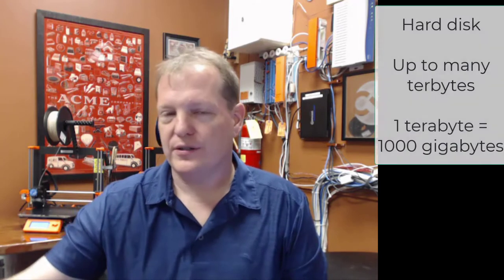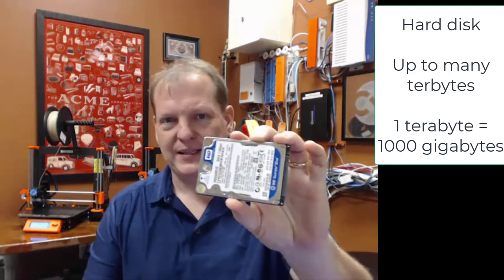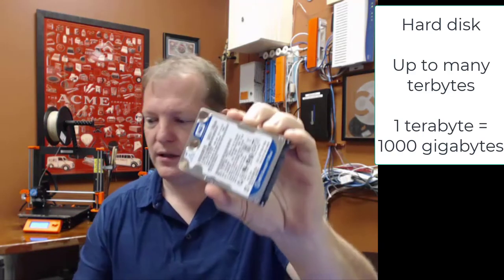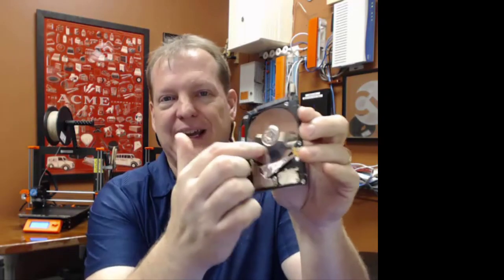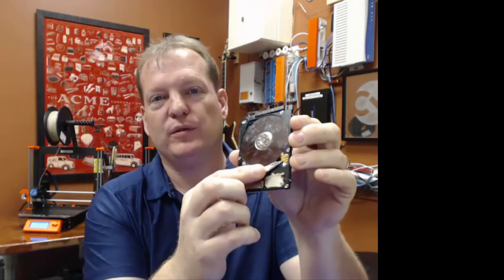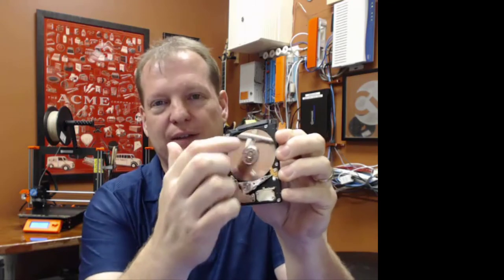The next big step up was the hard drive, and we're still using these in an awful lot of places. The hard drive looks something like this. There are a couple different formats for it. A little box, but on the inside you have a platter that was magnetic and a little arm that would move around. If you've got a record player, that's somewhat like an older mechanical version of a hard drive.